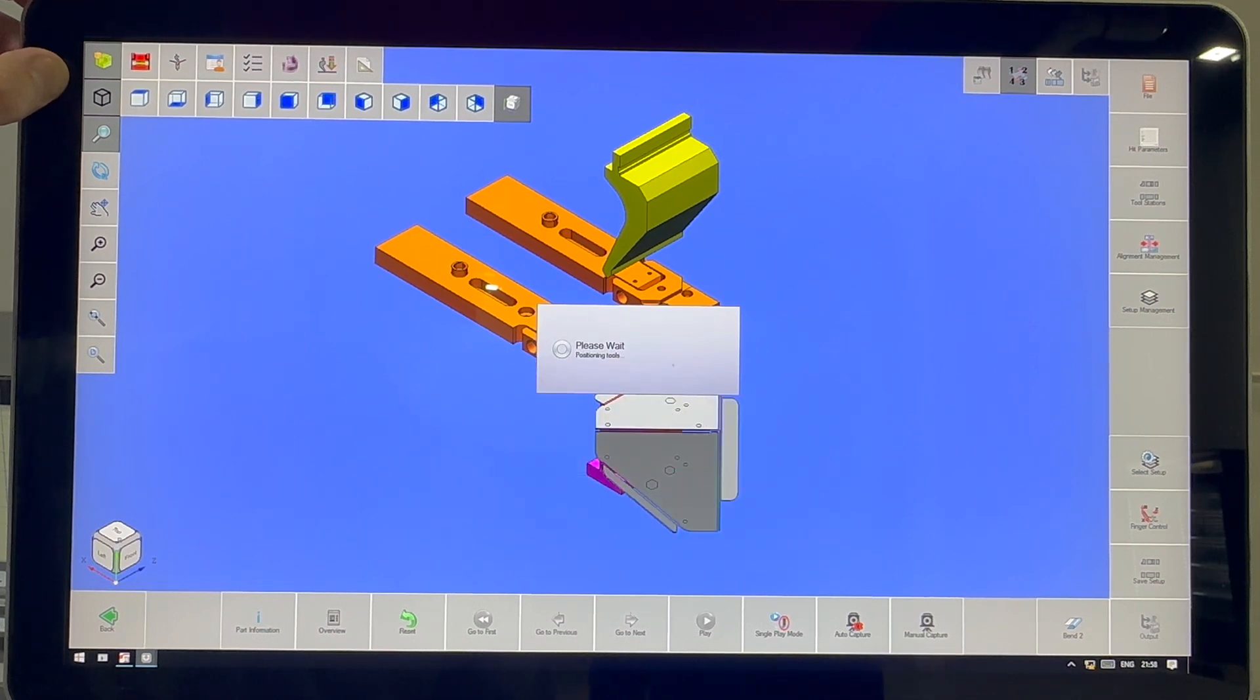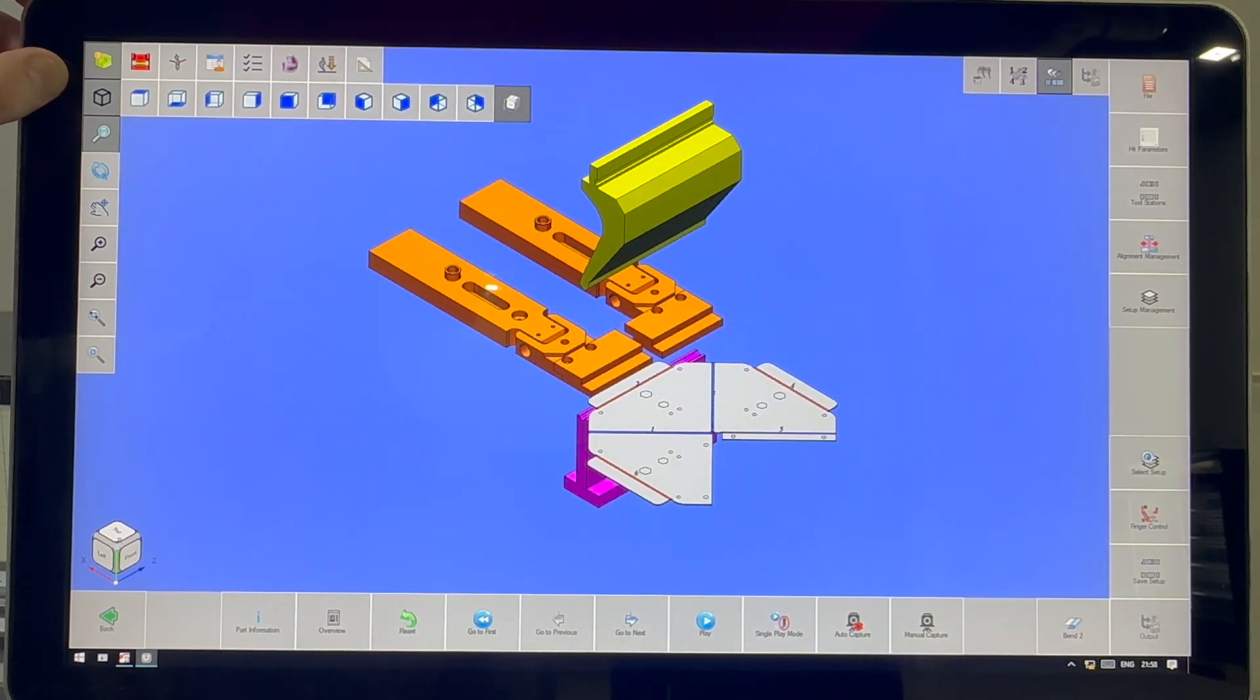Now all you got to do is hit simulation. There's six bends in this part. You probably can't see that on the little window. Then I'm going to hit play to see if I like this.